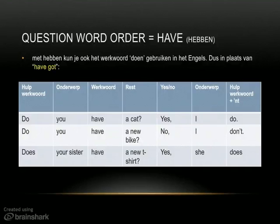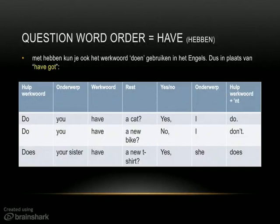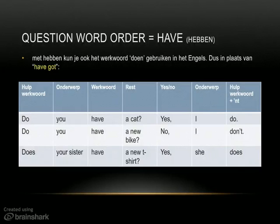You can also choose, for a sentence that does not have the verb to be, to use the verb to do. If you don't want to use have got, you can say do you have a cat? So you can choose have you got a cat or do you have a cat. The answer to have you got a cat is yes, I have. Do you have a cat? Yes, I do. So your answer repeats the question word. If you use do as your question word, you use do in your answer. If you use have as your question word, then you use have in your answer.